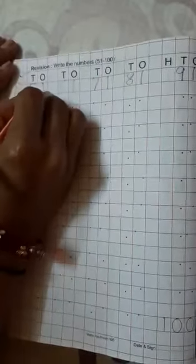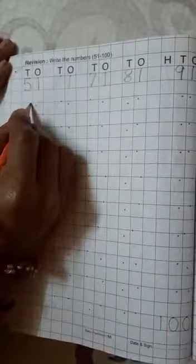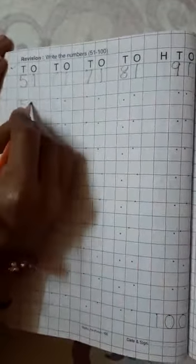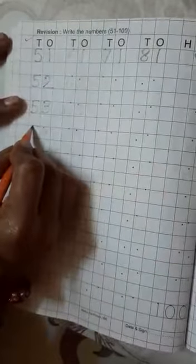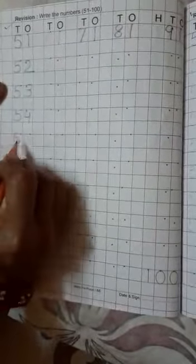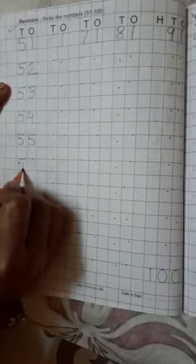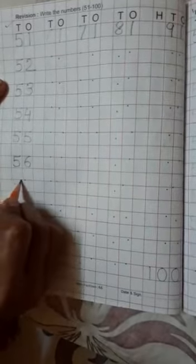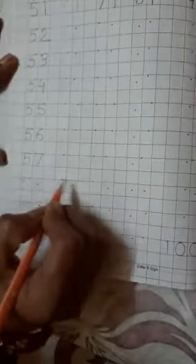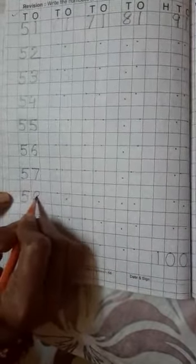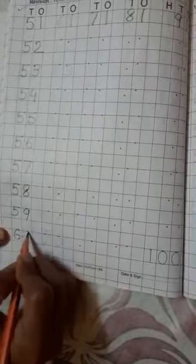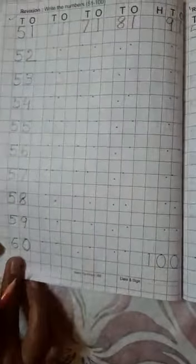5, 1, 51. 5, 2, 52. 5, 3, 53. 5, 4, 54. 5, 5, 55. 5, 6, 56. 5, 7, 57. 5, 8, 58. 5, 9, 59. 6, 0, 60. यह 51 की लाइन कम्प्टीट हो गई. लास में 60 आया.